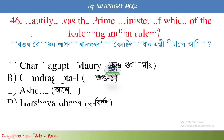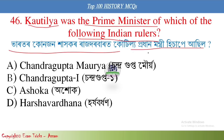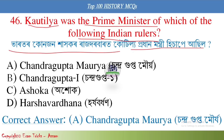Next question: Kautilya was the prime minister of which of the following Indian rulers? The answer is option A, Chandra Gupta Maurya.